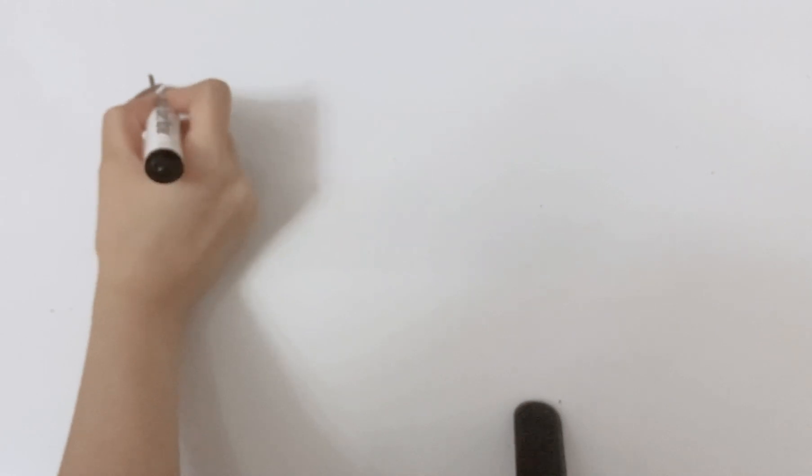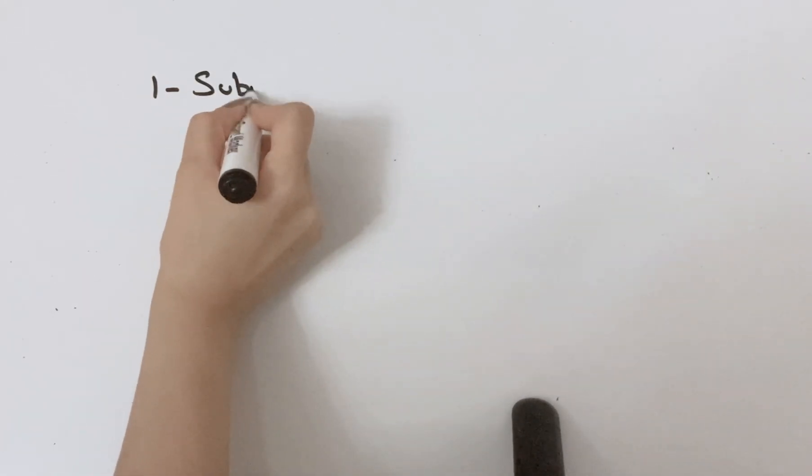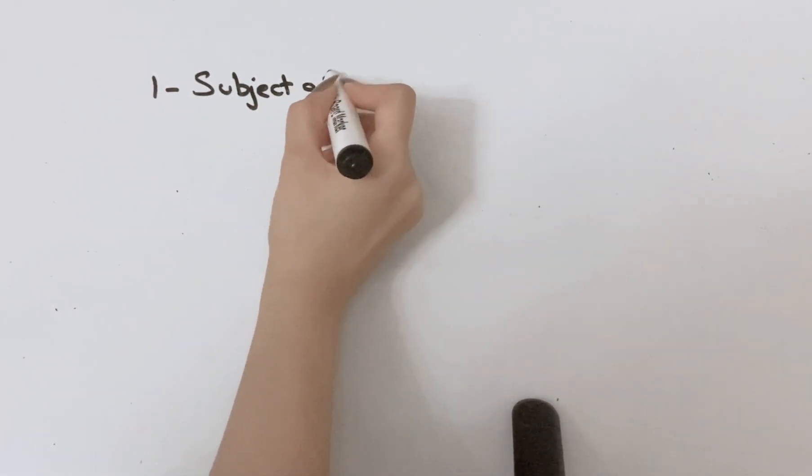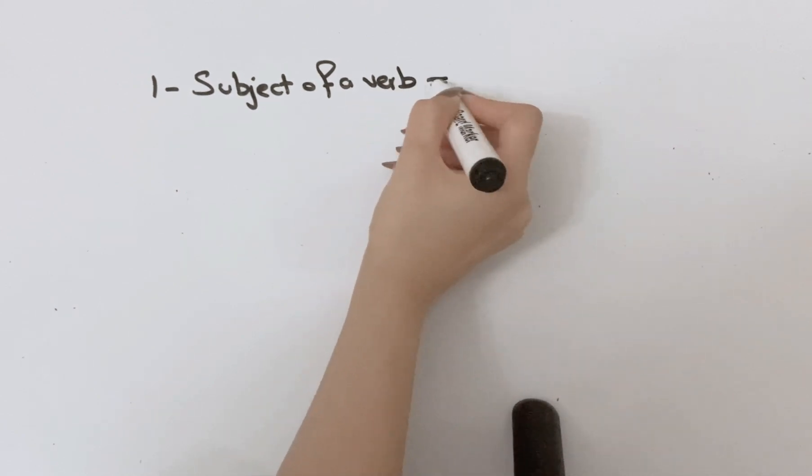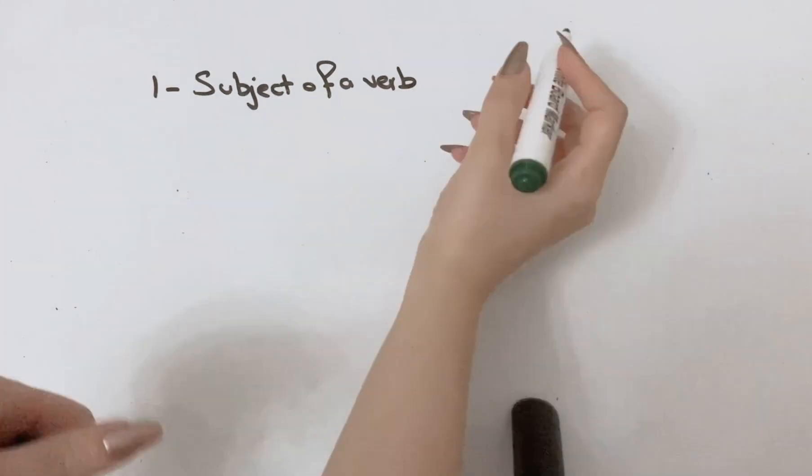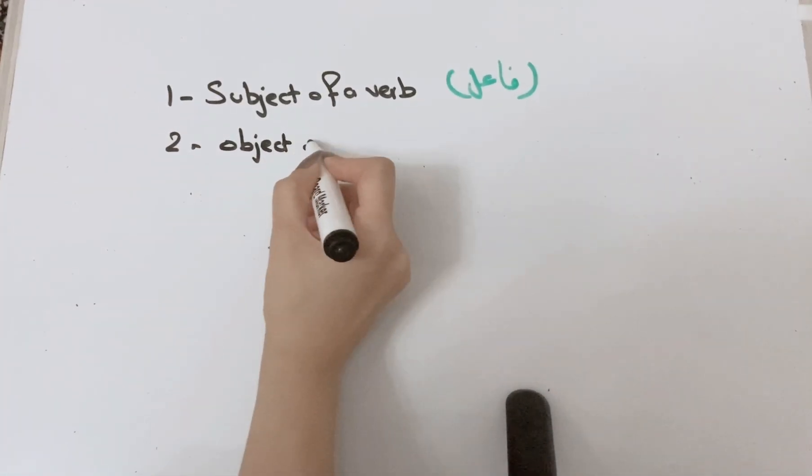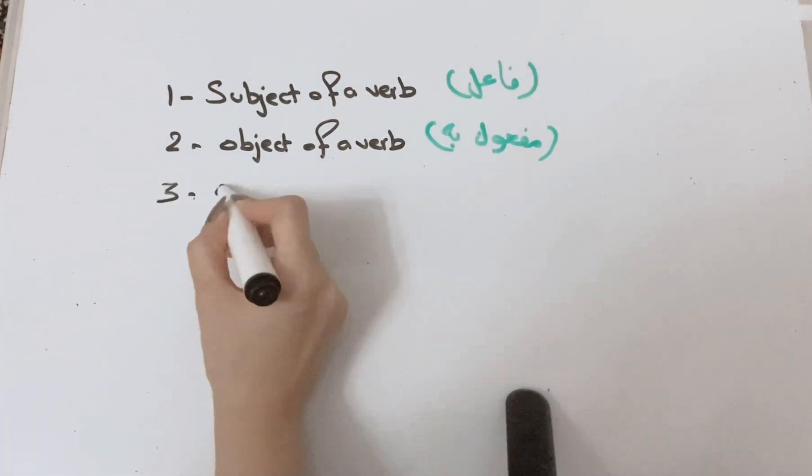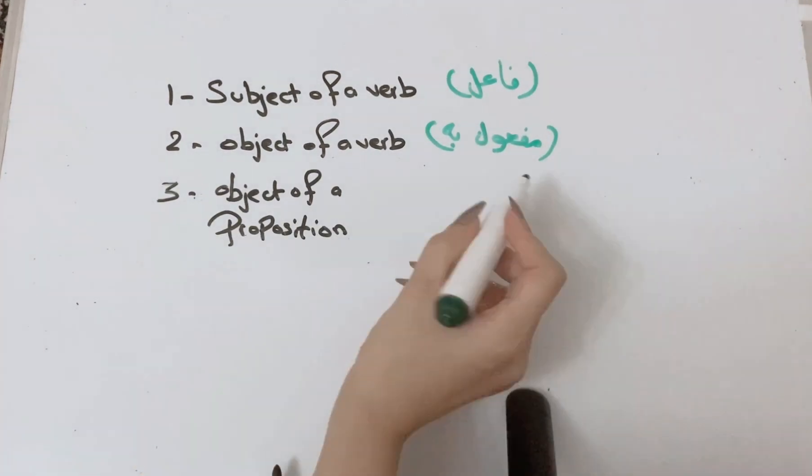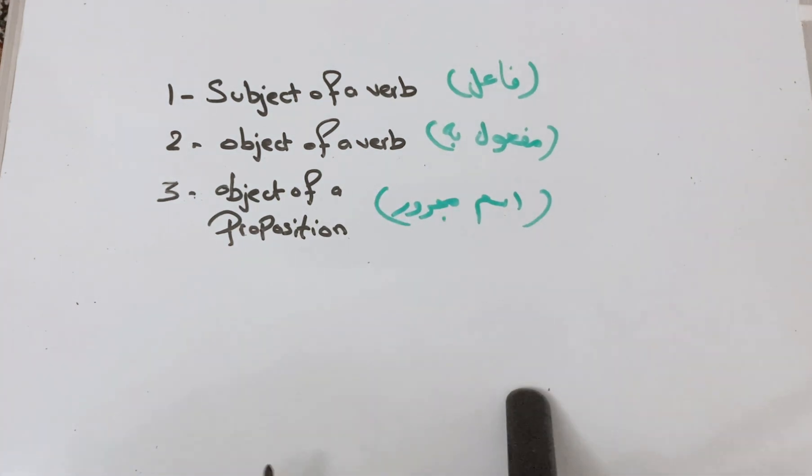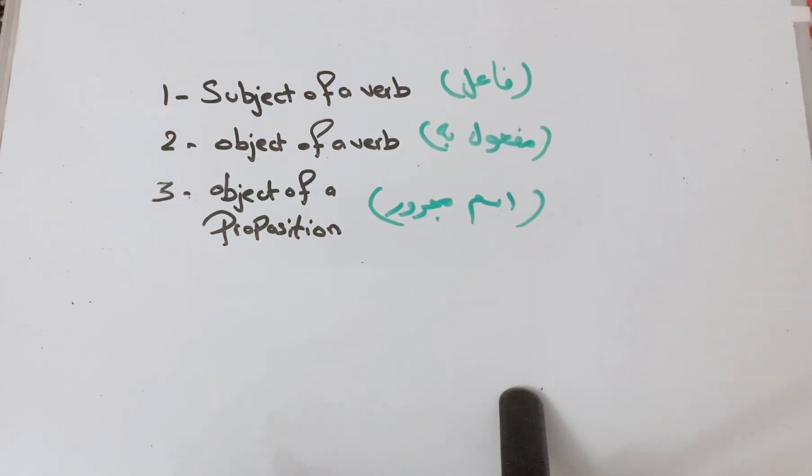To make your life easy, in my previous video I already taught you how to extract the subject of a verb, object of a verb, and object of a preposition in order to make Arabic simple.